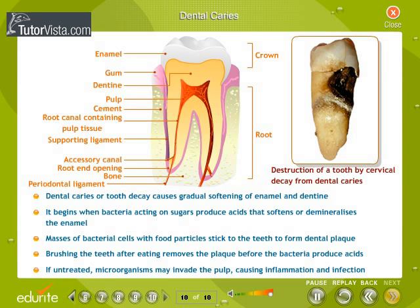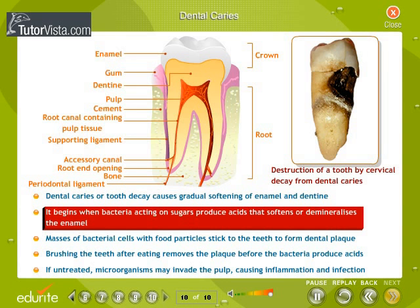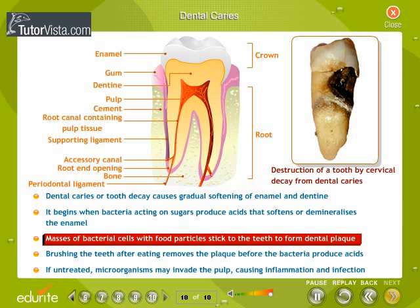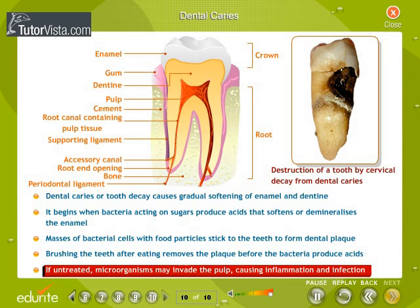Dental caries, or tooth decay, cause gradual softening of enamel and dentine. It begins when bacteria acting on sugars produce acids that soften or demineralize the enamel. Masses of bacterial cells with food particles stick to the teeth to form dental plaque. Brushing the teeth after eating removes the plaque before bacteria produce acids. If untreated, microorganisms may invade the pulp, causing inflammation and infection.